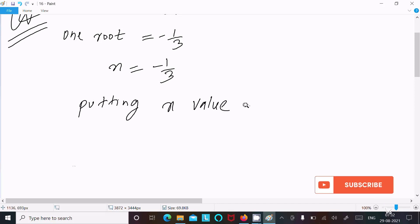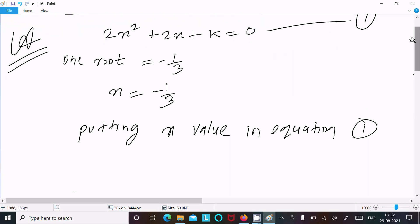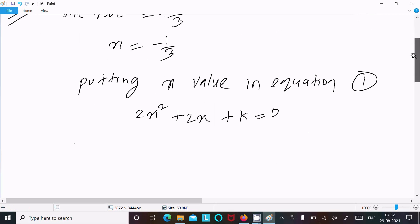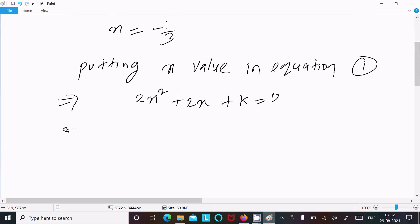Putting the x value in equation 1. Equation 1 is 2x² + 2x + k = 0. Here, 2x is now -1/3 squared plus 2 times -1/3 plus k = 0.